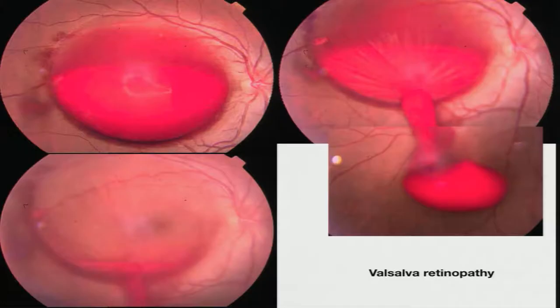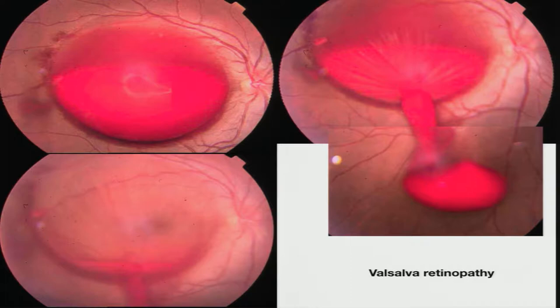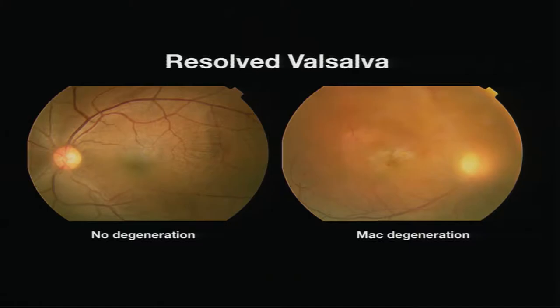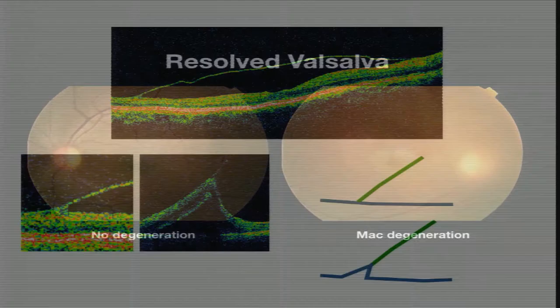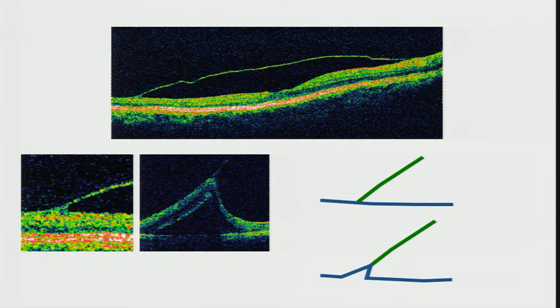In Valsalva retinopathy, we sometimes do YAG hyaloidotomy to open up the blood and drain it into the vitreous cavity for immediate visual rehabilitation. Not all patients end up with a poor visual outcome. To decide which patients need laser opening of the sub-ILM space, focus on where the ILM attaches to the retina. When there is no drag on the retina, the blood in the pre-retinal space may not be toxic. What matters is the pressure within the sub-ILM cavity.